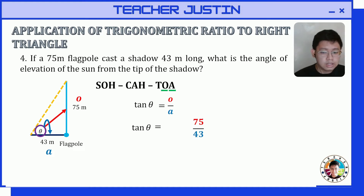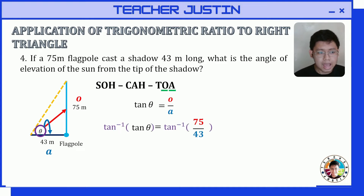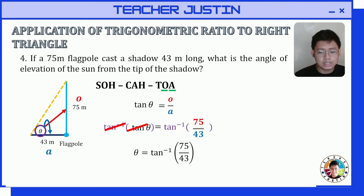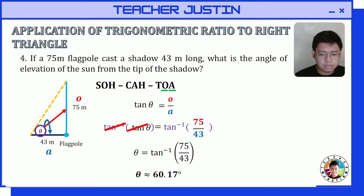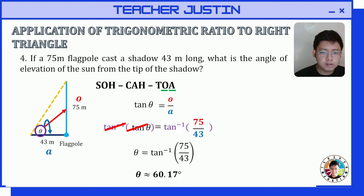To remove the trig ratio, we get the inverse of tangent on both sides, isolating theta. Theta equals arctan(75/43). Using our scientific calculator, that gives us an approximate value of 60.17 degrees, which is the angle of elevation of the sun from the tip of the shadow — our final answer.